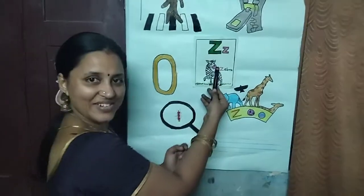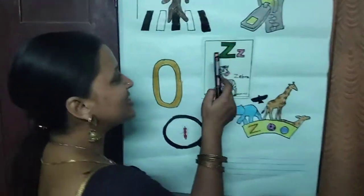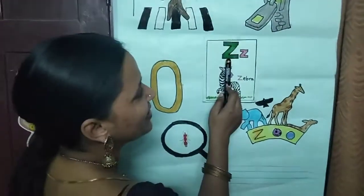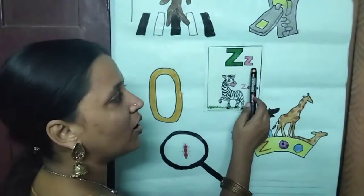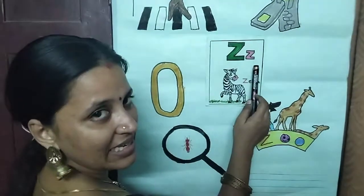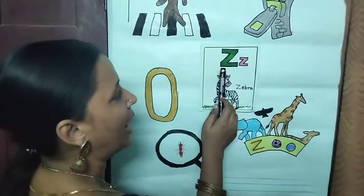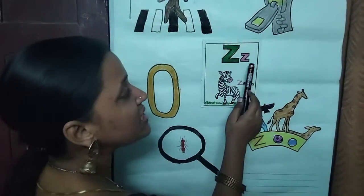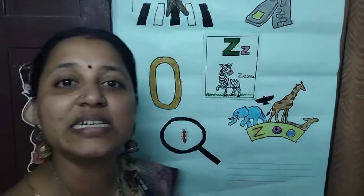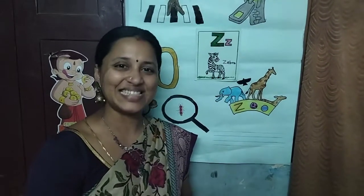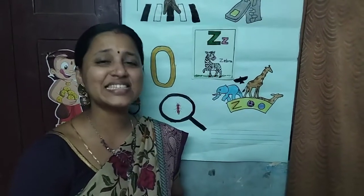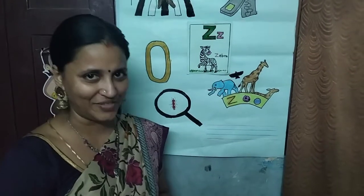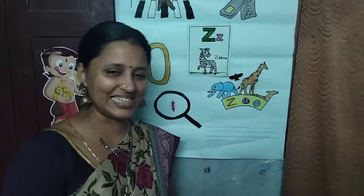Okay children. This is capital letter Z and this is small letter Z. Z is the sound of the letter Z.